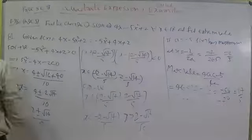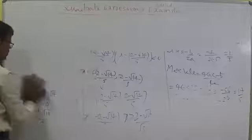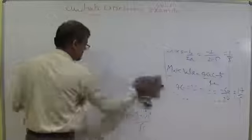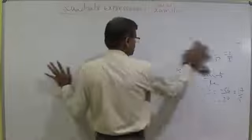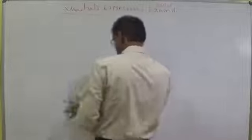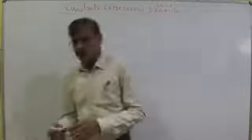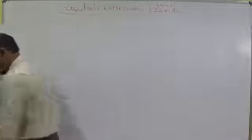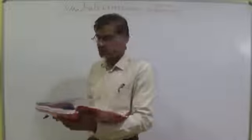Now we have entered the original quadratic expressions 4-marks concept. This chapter carries 6-marks weightage in IPE. The 2-mark sums are completed; now originally we have entered into 4-marks sums. Let us discuss example 7 — the most important IPE question, though sometimes students get confused.